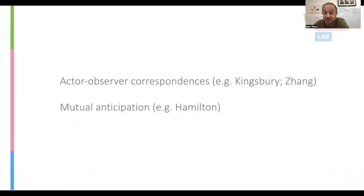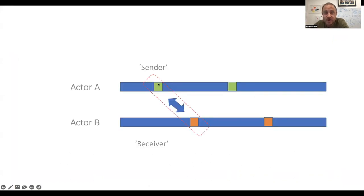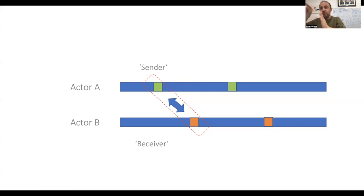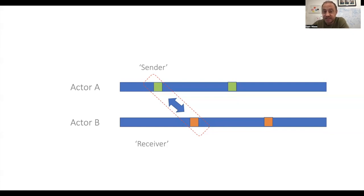Another thing we can look at is mutual anticipation — Antonia Hamilton's theory. This is the idea of time-lagged, not synchronous, associations. At the moments where the sender-receiver role shifts between people, do you get patterns related to the end of one turn and the start of someone else's? Is my brain activity forward-predicting your behaviour? We're looking at time-lagged relationships. I haven't got much on that yet — it's not something we've looked at specifically — but it's definitely possible with dual EEG's very high time resolution, and it will tell us something beyond what we get from behaviour alone.